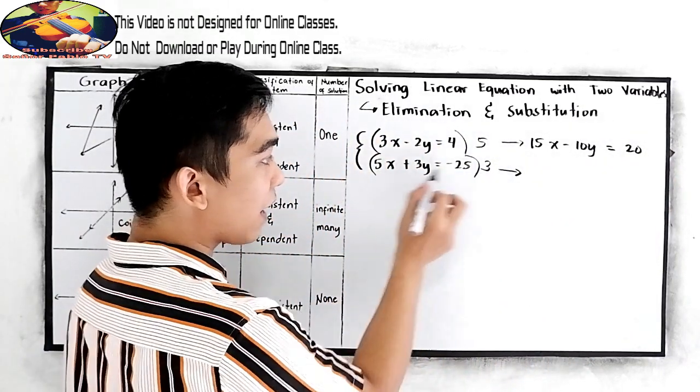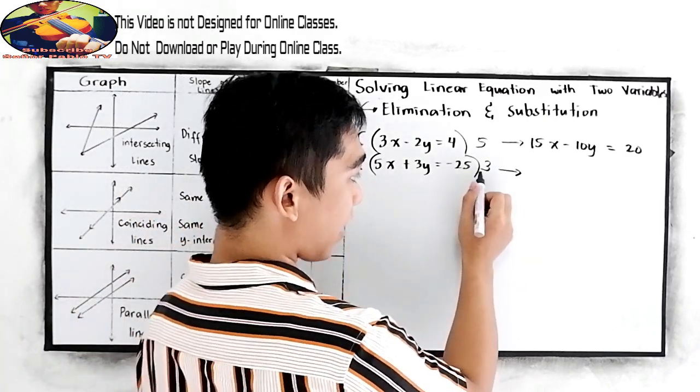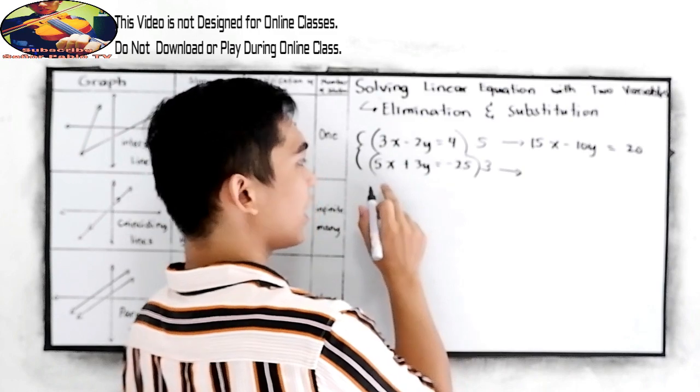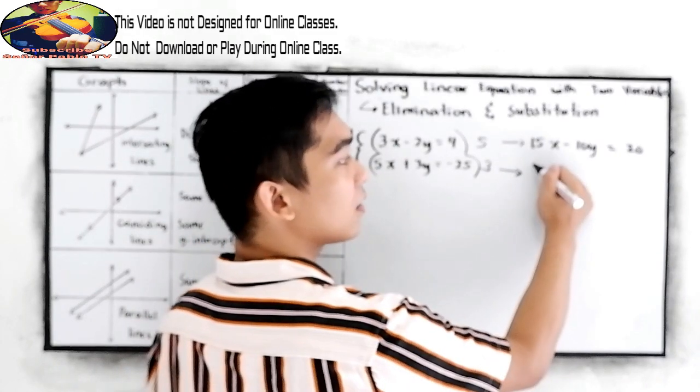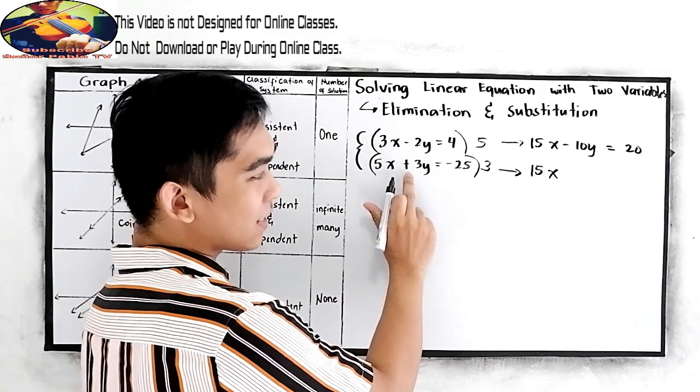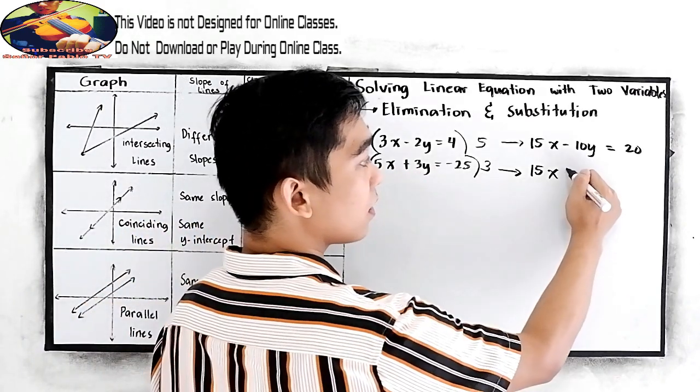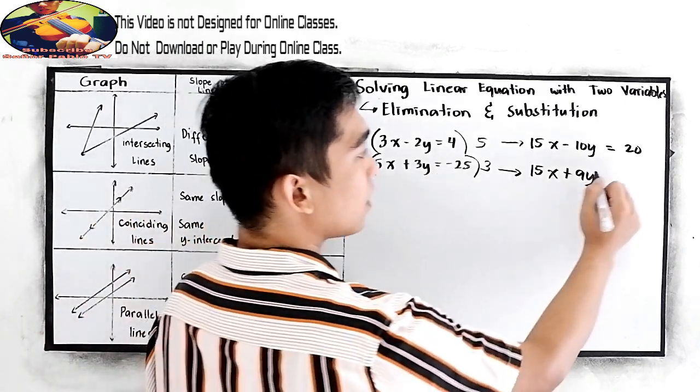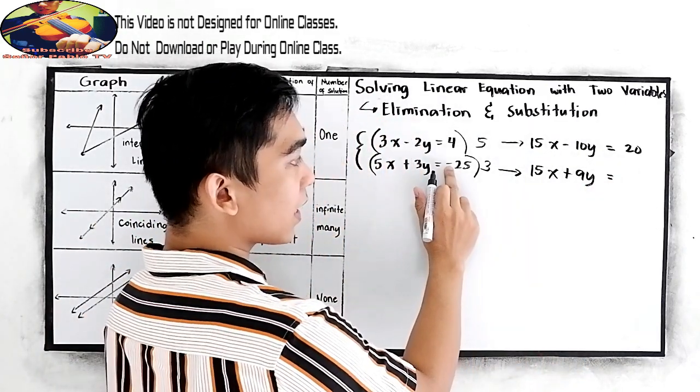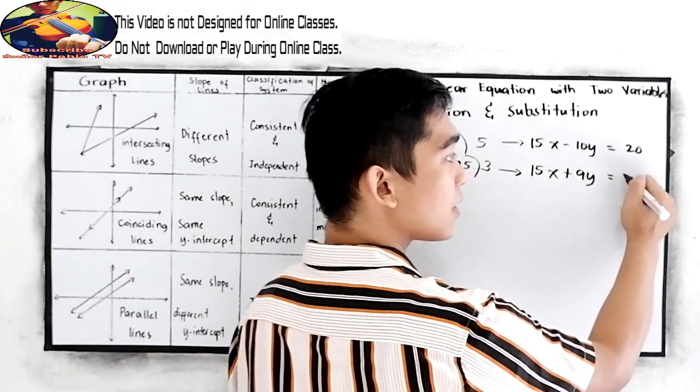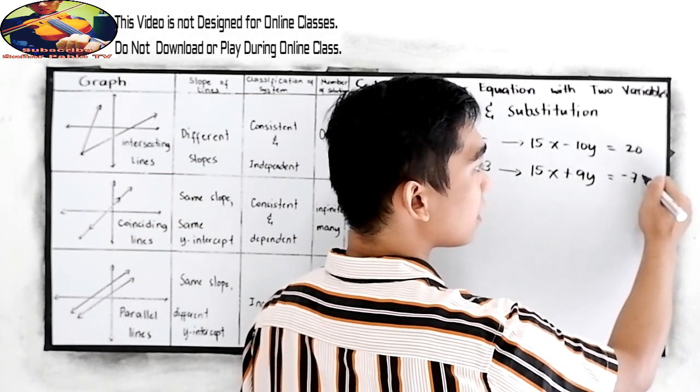Next, 5x times 3, that is 15x. Positive 3y times 3 is positive 9y is equal to negative 25 times 3, that is negative 75.